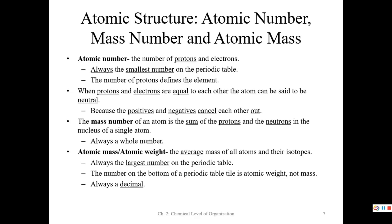The mass number is the sum of the protons and neutrons — it's a whole number, the sum of protons and neutrons in one atom. The atomic mass, or atomic weight (terms I use as equivalent), is the average mass of all atoms and their isotopes. The atomic weight is always the largest number on the tile, always a decimal — not a mass number. It's always going to be some kind of non-whole number.